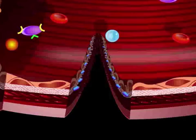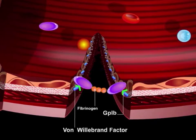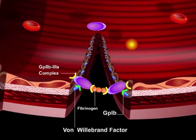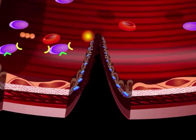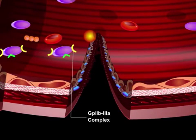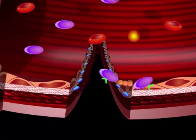Glanzmann's thrombasthenia is characterized by a defect in GP2B3A, a platelet-fibrinogen receptor complex. With this defect, primary hemostasis is inhibited because fibrinogen cannot cross-link platelets.